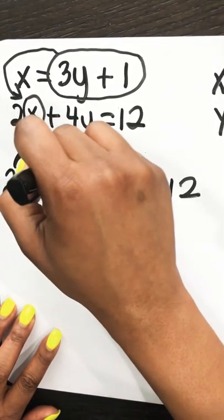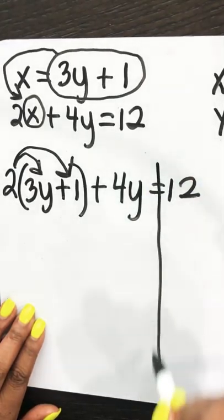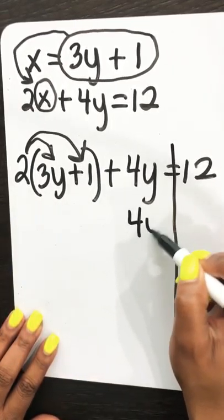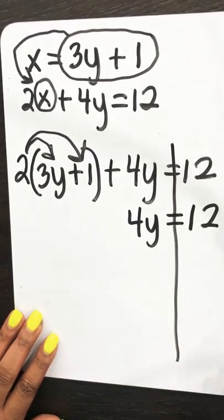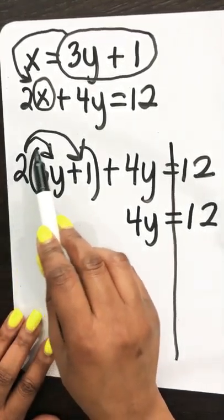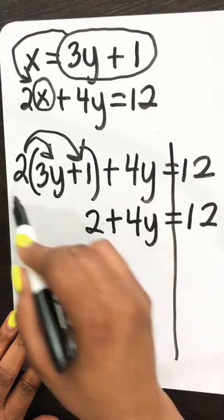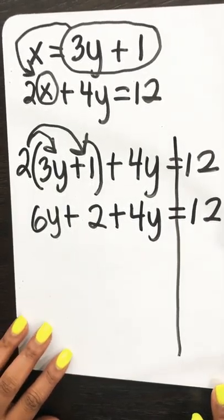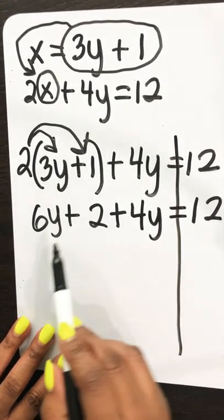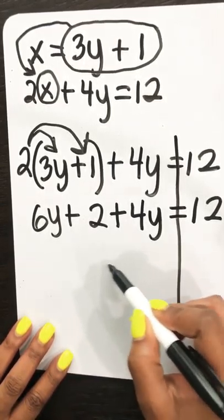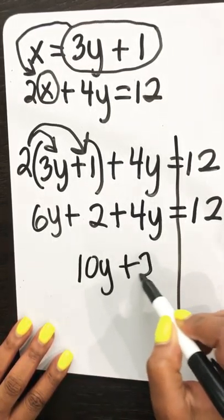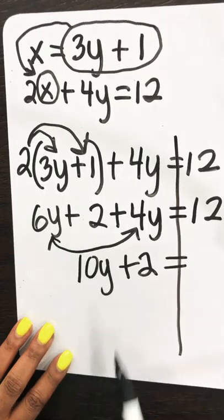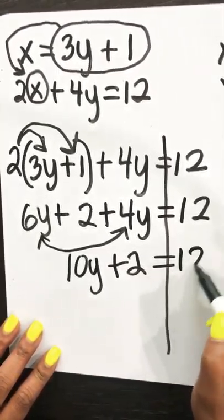We're going to distribute. Bring down the 4y and equals 12, then 2 times 1 is 2, and 2 times 3y is 6y. Now we're in a position to combine like terms: 6y plus 4y gives us 10y, then we bring down the plus 2 and the equals 12.